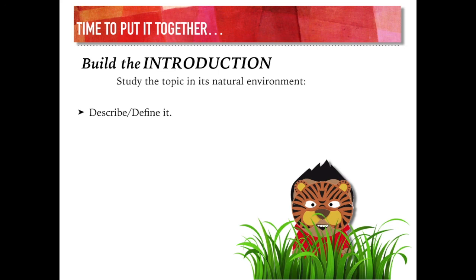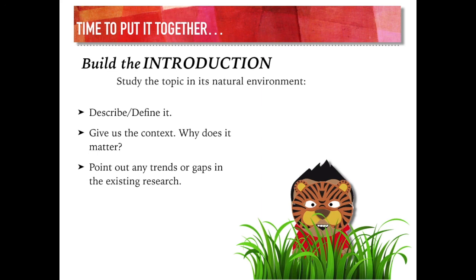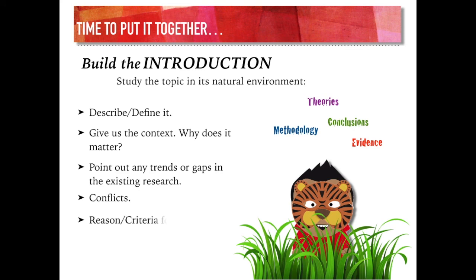Start by describing or defining your topic clearly. You might give some context and explain why it matters. Point out any trends or gaps in the existing research. Think about conflicts — can you give a quick overview of any conflicts in methodologies, theories, conclusions, or evidence? Give a sense of the criteria you used in reviewing the articles. And you might give an overview of the scope of your research: are we going back 5 years, 10 years, 50 years? And is it something local, contained in the United States, or maybe global?